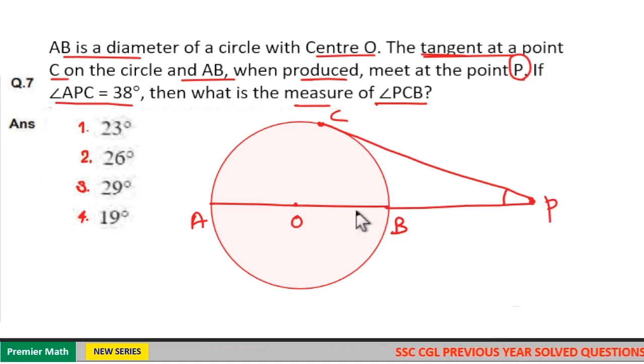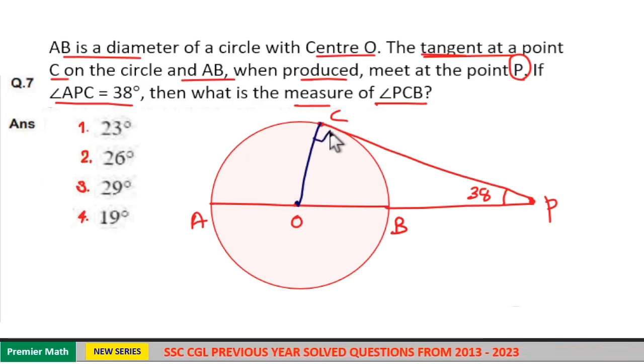Now this angle angle APC is 38 degrees. We have to find out what is angle PCB. Before that, here OC is radius. Radius creates 90 degrees with the tangent. Now this is 90 degrees and this is 38 degrees.